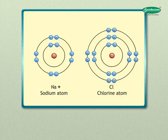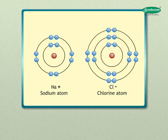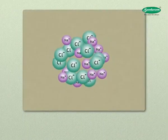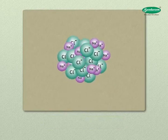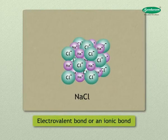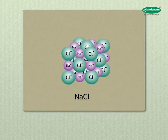The electron lost by sodium is taken up by chlorine. After gaining one electron, chlorine's shells have altogether 18 electrons but the nucleus still has 17 protons, forming the chloride anion Cl⁻. Sodium and chloride ions, being oppositely charged, attract each other and are held by strong electrostatic forces of attraction to exist as NaCl — forming an electrovalent or ionic bond.